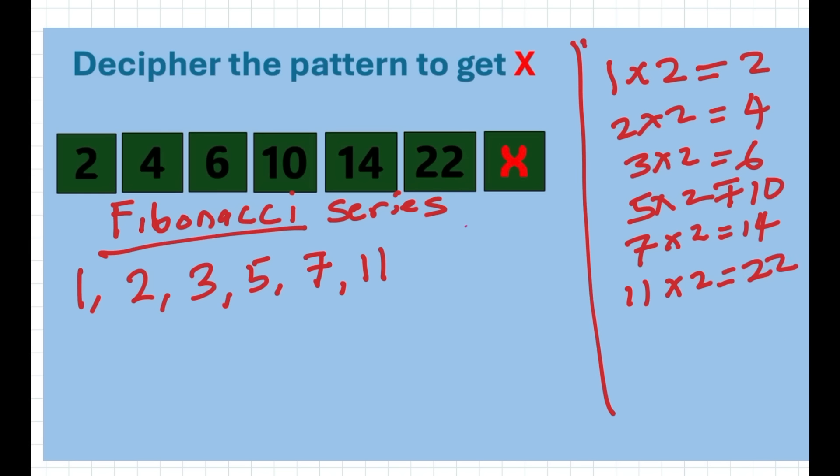If you multiply thirteen by two, you'll get twenty-six. Therefore, our answer X equals 26. Did you get this using this method?